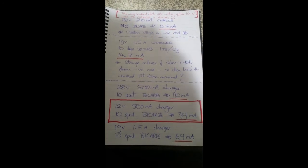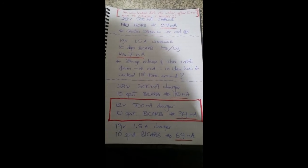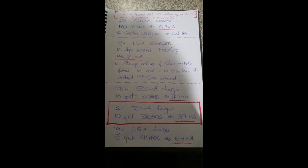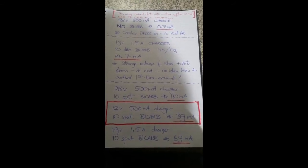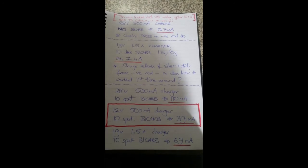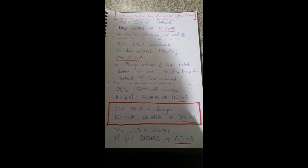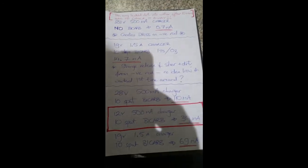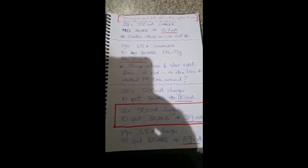As you can see here, 19 volt 1.5 amp charger, 10 spatulas of bicarb to one pint of distilled water creates 69 milliamps, and that had quite a pleasing result I hasten to add. It's only 30 more milliamps than the above option.